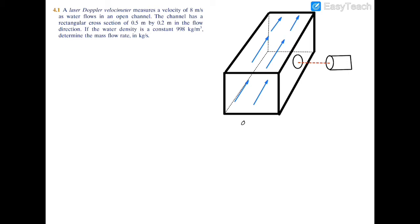We're given the dimensions of this channel. We're told that it's a 0.5 meter by 0.2 meter channel and it is rectangular, so the area is pretty easy to find. We're also given that the density of that water is 998 kilograms per cubic meter, and the velocity is 8 meters per second.